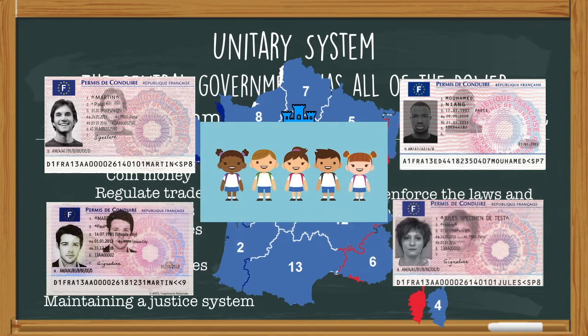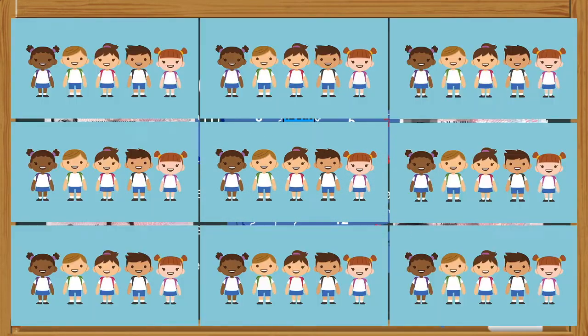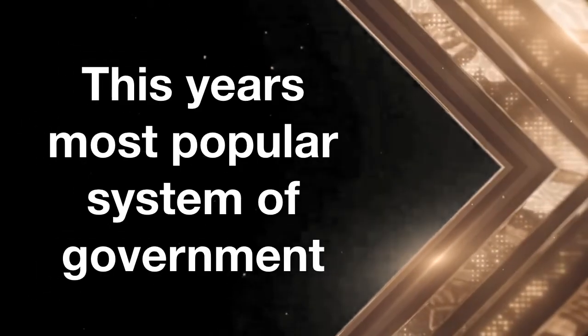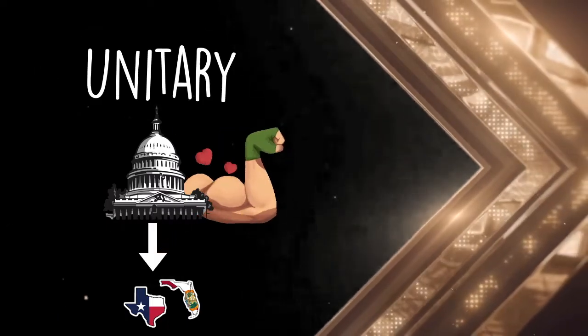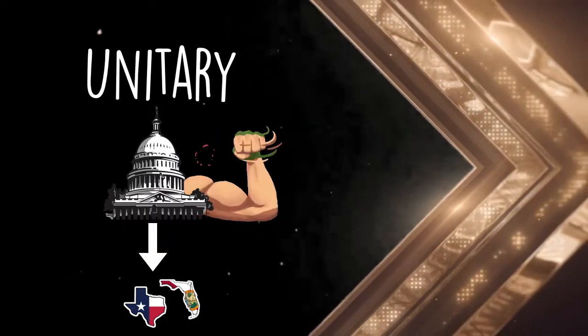It's kind of in the name, right? Unitary — it's like very uniform. Think about school uniforms and how they're the same in every classroom of the school. It's easy to understand why this is the most common system of government in the world. It is a very effective way of running a country. All of the rules and laws come from one place and everybody follows them.